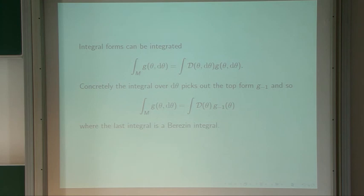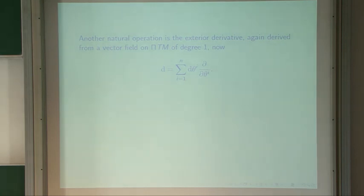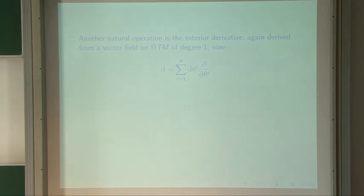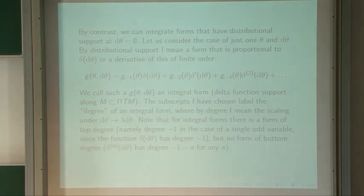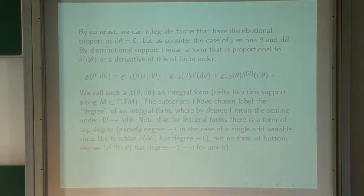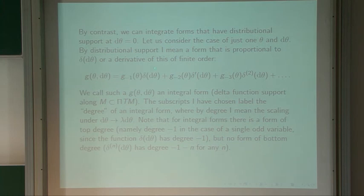Another natural operation is the exterior derivative defined in the same way as before: you multiply by d-theta and differentiate with respect to theta. Looking at this expansion, multiplying by d-theta moves us to the left because d-theta times delta'(d-theta) is minus delta(d-theta). It increases the degree by one, so it moves us to the left. Eventually, when we get to the last step, d-theta times delta(d-theta) is zero, so the exterior derivative annihilates the top form — just as in ordinary geometry.